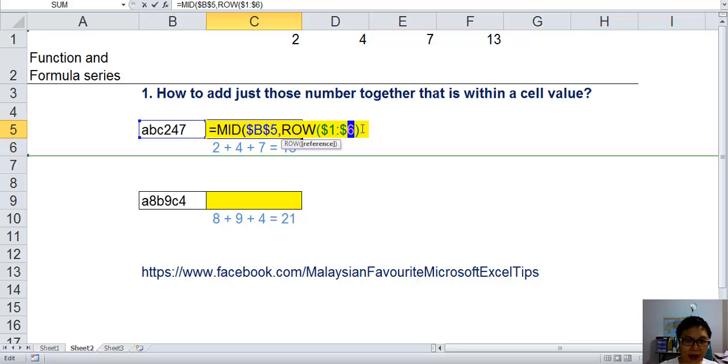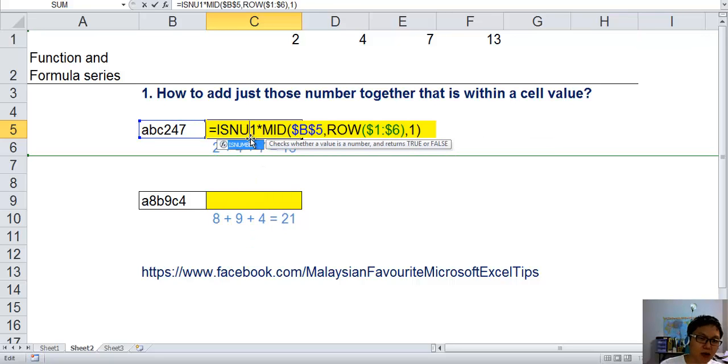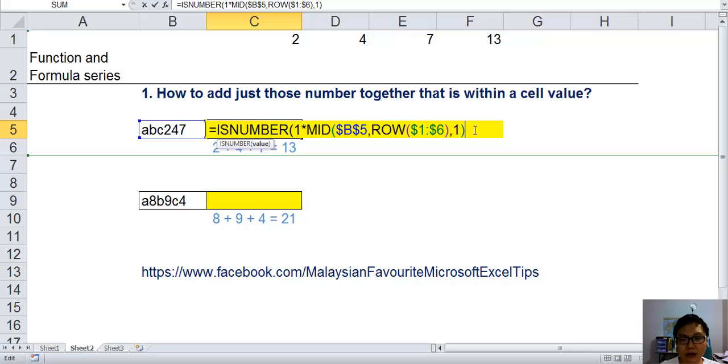We're not going to talk that. Now just put 1. This formula itself will actually break this text into 6 parts. Each of them is a character. Now we're going to use times 1 to change those strings, those characters. For example, A times 1 is still A, so it's still a text. But when it comes to 2 times 1, it will turn the text into a number. Then we use a function called ISNUMBER to check all these 6 different characters one by one. And we'll use an IF function as well.